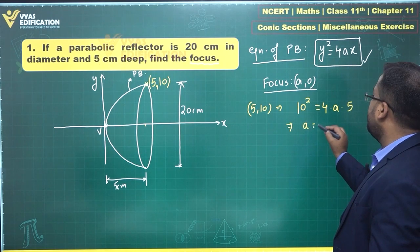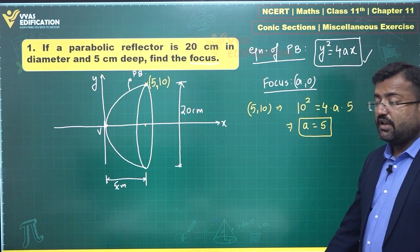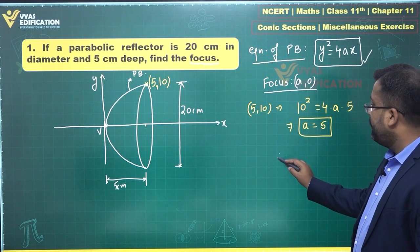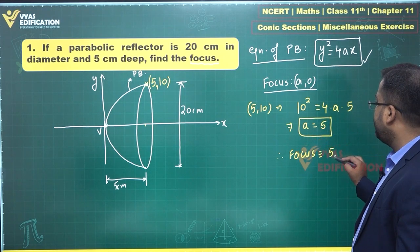If the parabola passes through (5, 10), we can say that 10² = 4 × a × 5. What does that tell me? a equals, 100 upon 20, that will give me a equals 5. Therefore, focus will be at (5, 0).